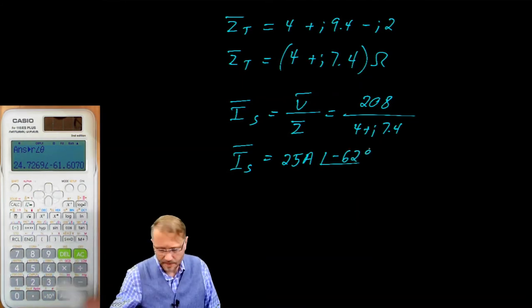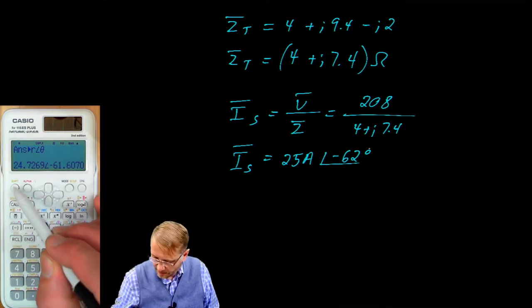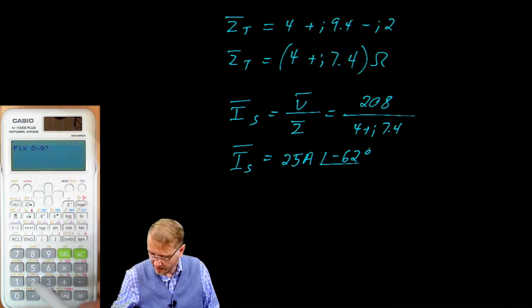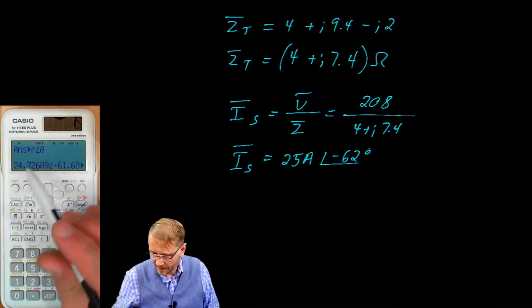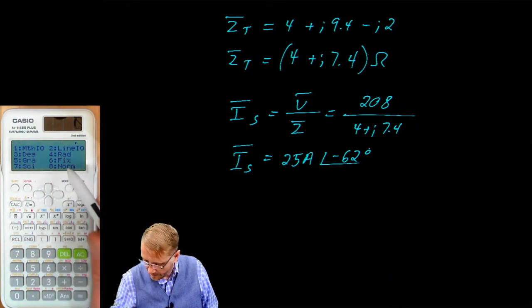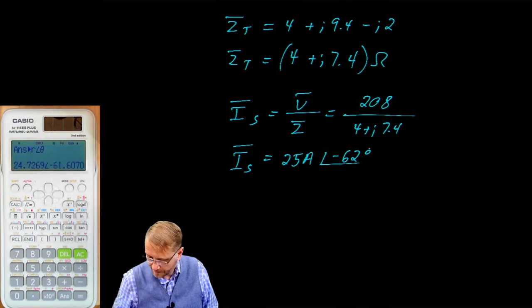Your calculator may have many more digits than this. And that can sometimes get annoying. If you want to take care of that, go shift, setup, and then this button here, 6 is for fixed. And maybe only display 4 significant figs. That's a little bit better. Let's try that again. So shift, setup, fix, and 4. There we go.